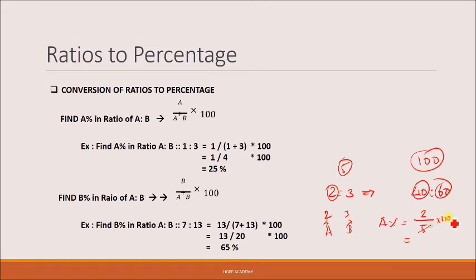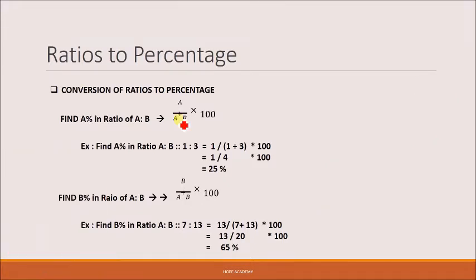So that is again: this is 20, this is 40 percentage. For example, 3 by 5 into 100 is equal to 60 percentage. So the formula is: A's percentage = A by (A plus B) into 100. B's percentage = B by (A plus B) into 100. So here, 1 by 3 - A's percentage is 25%. Find B's percentage in the ratio. So B is 13 by 20, which gives 65 percentage.